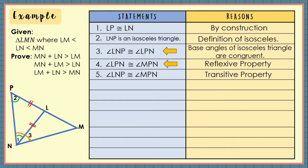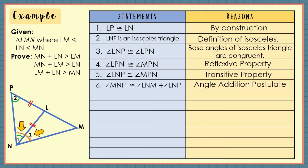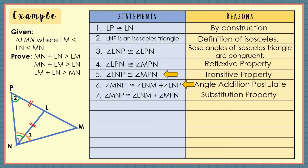For statement number 6, from the illustration, angle MNP consists of angles LNM and LNP. Adding these two angles, they equal angle MNP by the angle addition postulate. For number 7, using statements 5 and 6, substituting angle LNP with its congruent angle MPN, angle MNP is equal to angle LNM plus angle MPN by substitution property. Next, using statement 7, angle MNP is greater than angle MPN by the property of inequality.